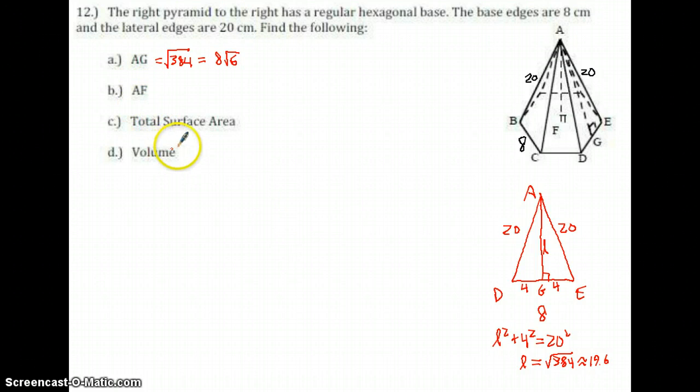So now we're supposed to find AF. AF is the straight up height. You can do that a couple different ways. I think I'm going to use the triangle A-F-E. I could go A-F-G also. I'm going to do A-F-E.